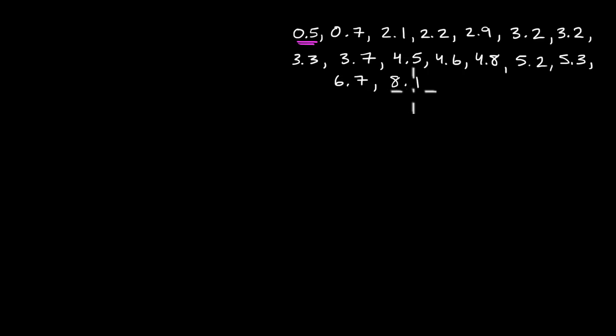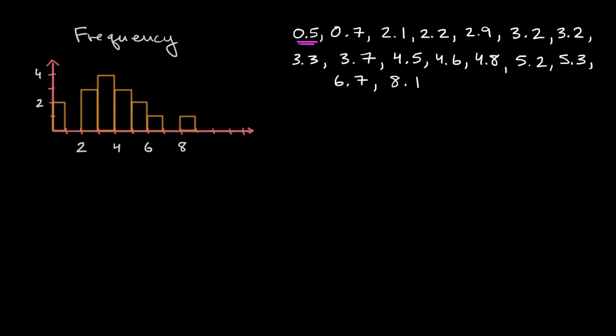If we want to visualize that, we can set up a frequency histogram, where we can create some categories. This first category would be for data points that are greater than or equal to zero, and less than one. And we can see that two data points fall into that category, and that's why the bar right over here for that category is up to two.